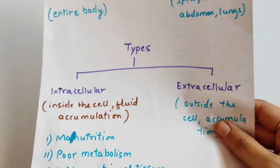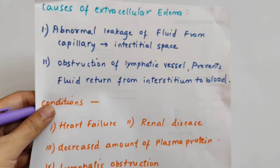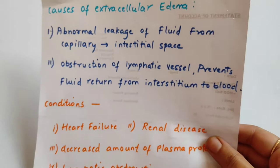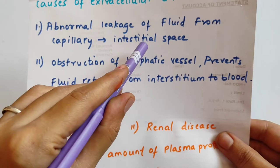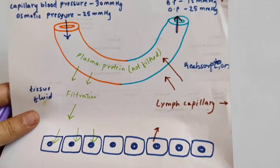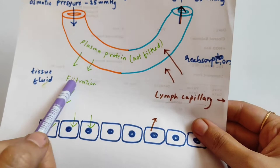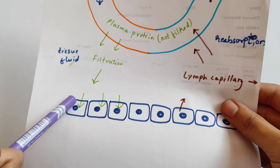For extracellular edema, there are two causes. The first is that abnormal leakage is happening from the capillary to the interstitial space, meaning fluid accumulates in the interstitial space. In intracellular edema the fluid is inside the cell, causing the cell to swell up.